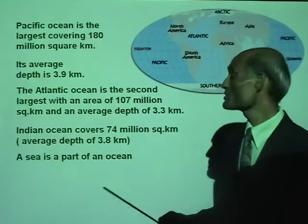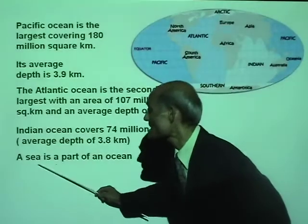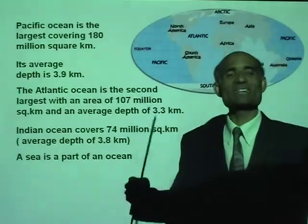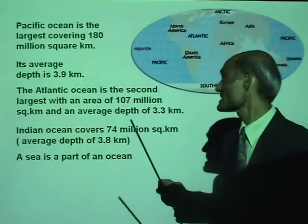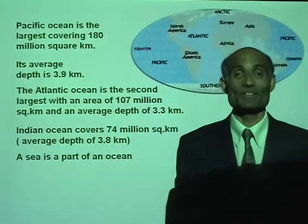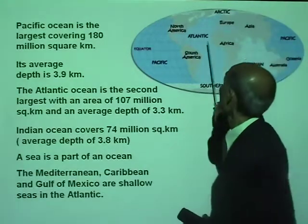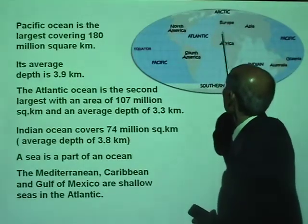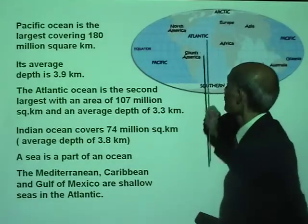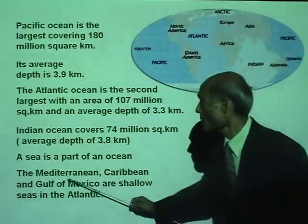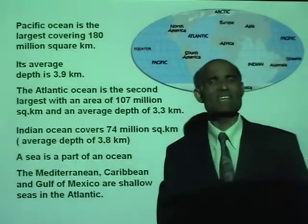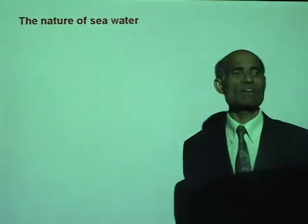We also talk about seas. What is the difference between an ocean and a sea? A sea is part of an ocean. If you look at the Mediterranean Sea, the Gulf of Mexico, or the Caribbean Sea, they are all parts of the Atlantic. So a sea is actually part of an ocean.